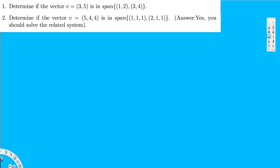Let's do this problem. The question is asking: determine if the vector v = (3, 5) is in the span of (1, 2) and (3, 4). To do this, I have to arrange these vectors in columns. If I multiply the first by x and the second by y and set them equal to (3, 5), then if I can solve for x and y, that means v is in the span.